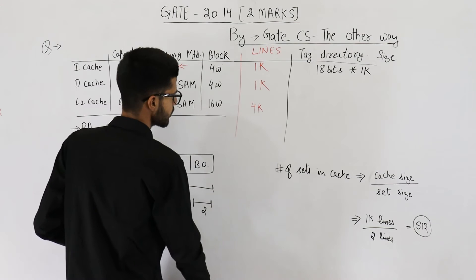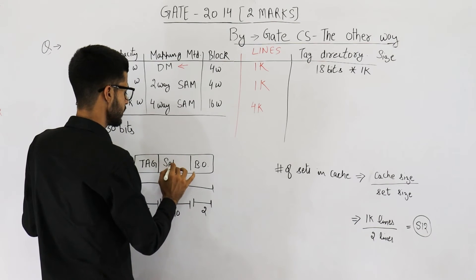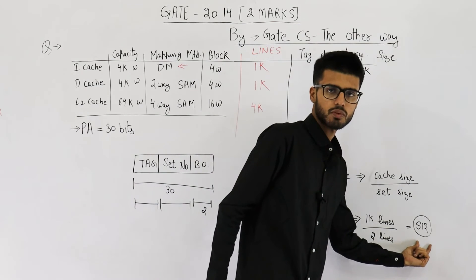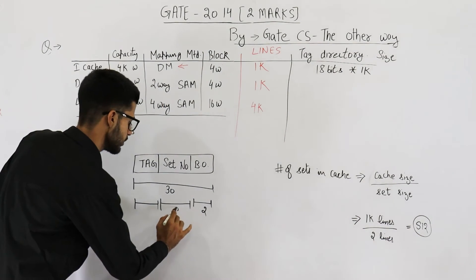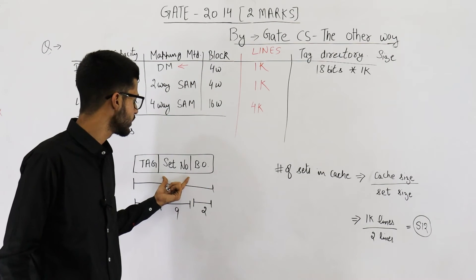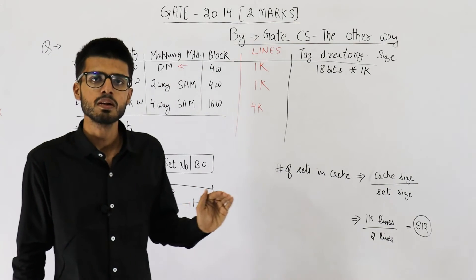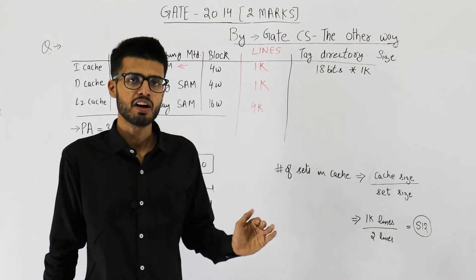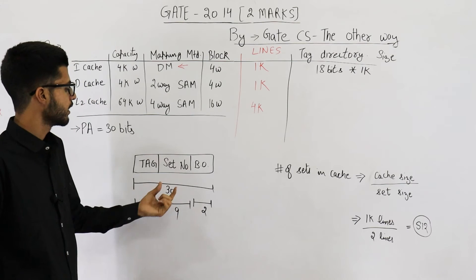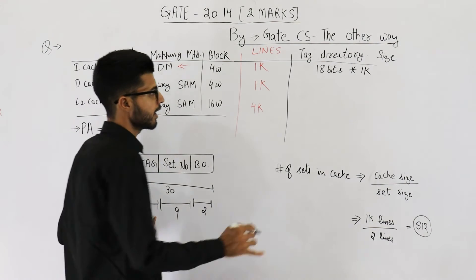In k-way set associative mapping, the physical address is split into tag, set number, and block offset. The first cache (I-cache) is done. For D-cache, this field becomes set number. There are 512 sets = 2 raised to the power 9, so 9 bits are needed for the set number. The tag = 30 minus (9 + 2) = 30 minus 11 = 19 bits.